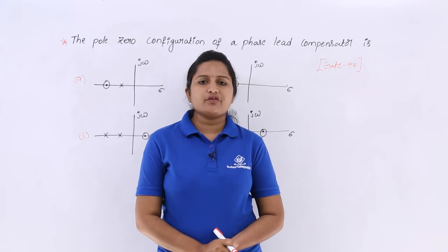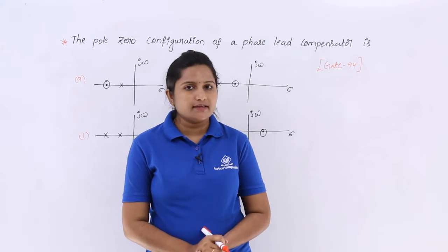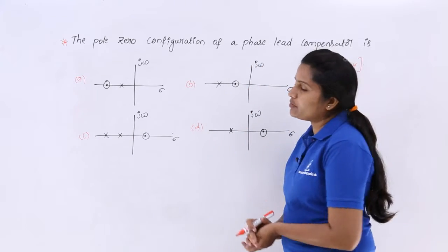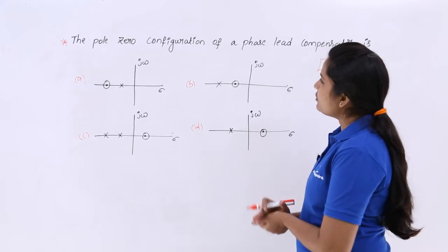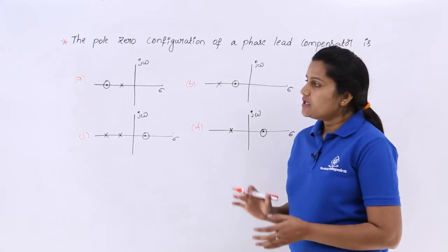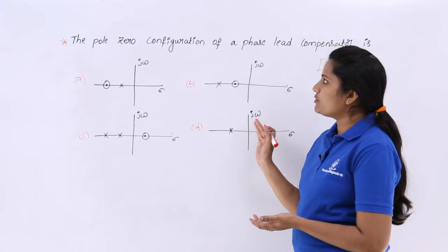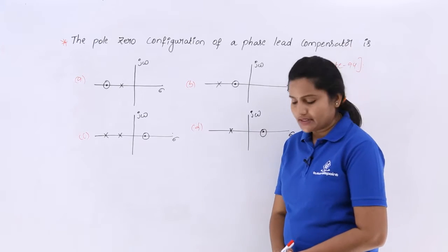In this video, we are going to discuss a previous GATE problem related to lead compensator. We can observe the problem here. The pole-zero configuration of a phase lead compensator is. Here we need to find out what is the pole-zero configuration or pole-zero plot of a phase lead compensator.